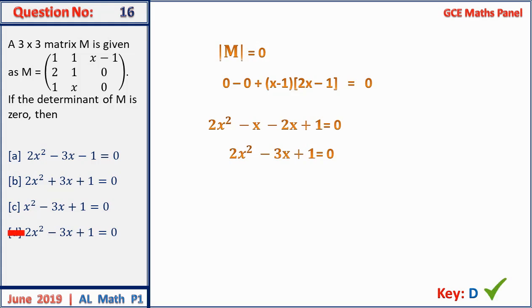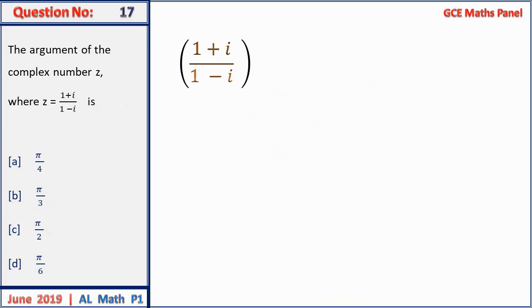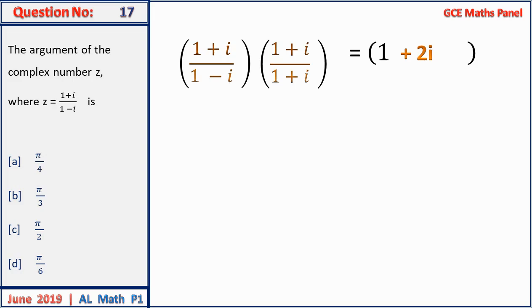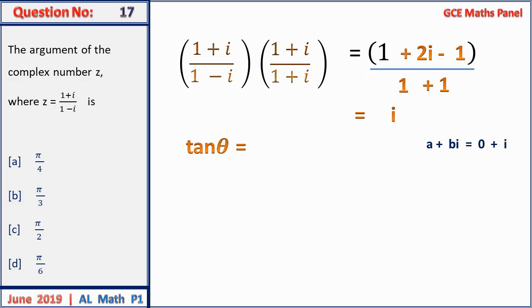Question 17: find the argument of the complex number. Multiply numerator and denominator by the conjugate 1 + i. The numerator gives 1 + i + i + i² = 1 + 2i − 1 = 2i, and the denominator gives 1 + 1 = 2. So the result simplifies to i. Writing i = 0 + 1·i, we have a = 0 and b = 1. Since tan θ = b/a = 1/0, which is infinity, θ = 90° = π/2. Answer A.